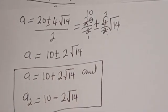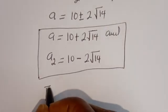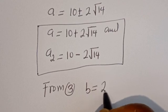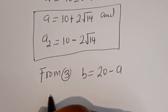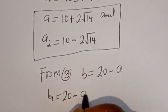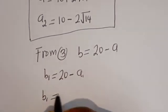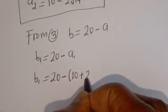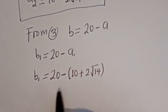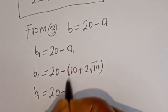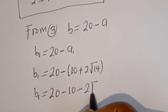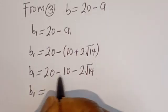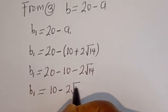We can solve for B using equation 3. To get B1: B1 equals 20 minus A1, which is 20 minus (10 plus 2 root 14). This gives B1 equals 20 minus 10 minus 2 root 14, so B1 equals 10 minus 2 root 14.